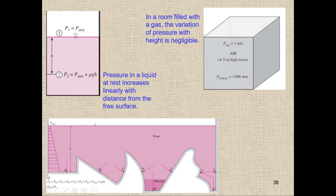We have different shapes of containers. Points A, B, C, D, E, F, and G are all at the same level for the same fluid. For any fluid at the same level, the pressure is the same: P_A = P_B = P_C = P_D = P_E = P_F = P_G.